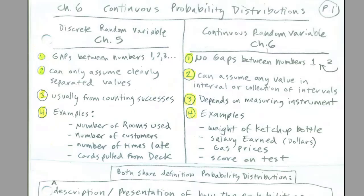Now continuous random variables. There's no gaps between numbers. For any two numbers, we could have as many possible values between there. It depends on the measuring instrument. The continuous random variable can assume any value in an interval or collection of intervals. It depends on the measuring instrument.